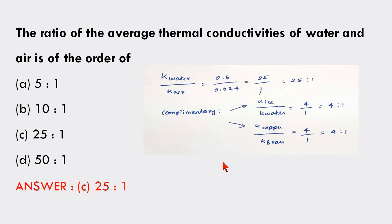The thermal conductivity of a pure metal is always greater than that of its alloys. The thermal conductivity of damp material is always greater than that of dry materials.